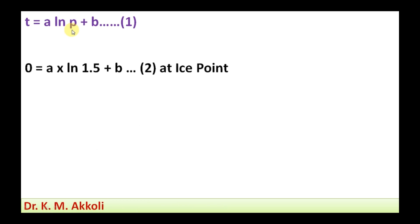If you use that at ice point, the p value is given 1.5. Then 0 temperature at ice point, that is equal to a into ln 1.5 plus b. That we will call as equation 2.